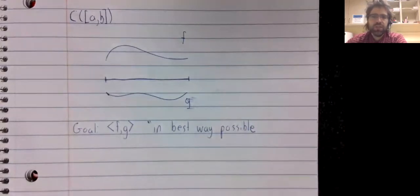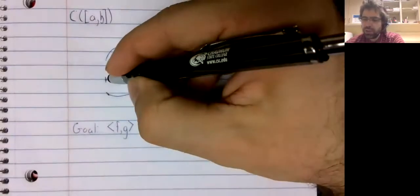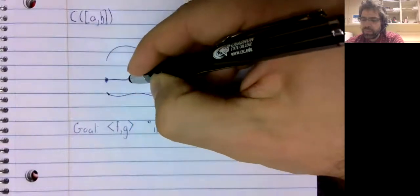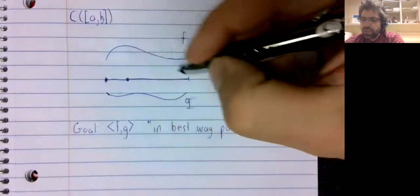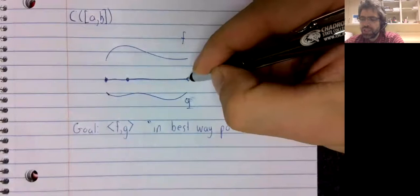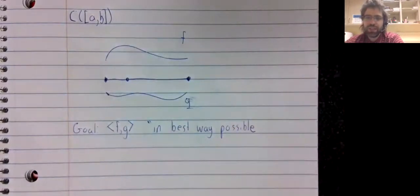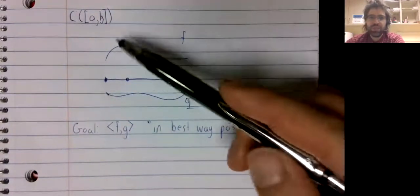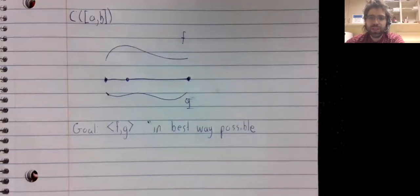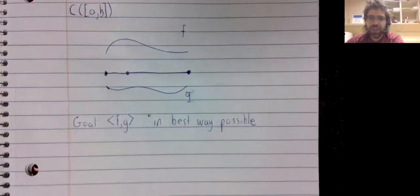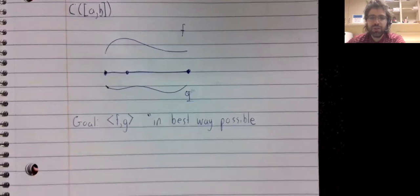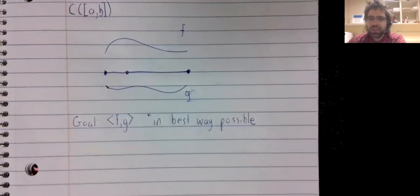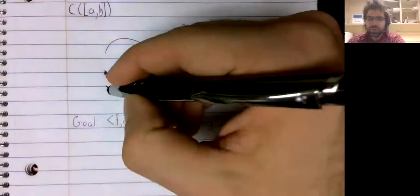So think of the inner product we've defined on polynomials. It actually isn't an inner product on the space of general continuous functions, but let's not worry about technical details. Let's just ask ourselves if that is the inner product we decide to use.